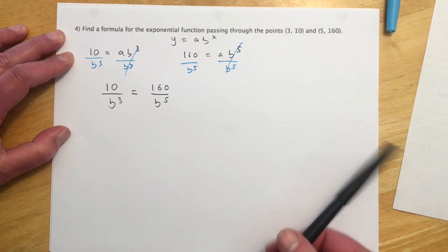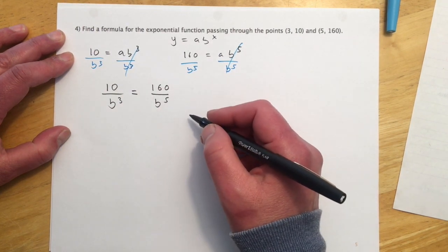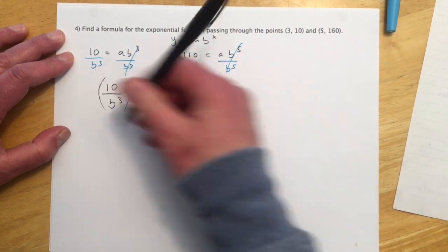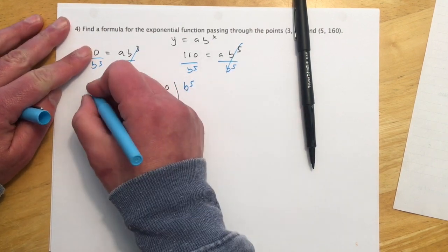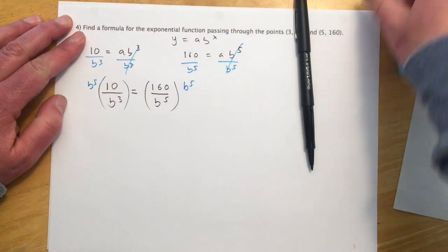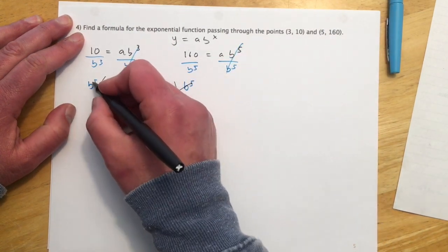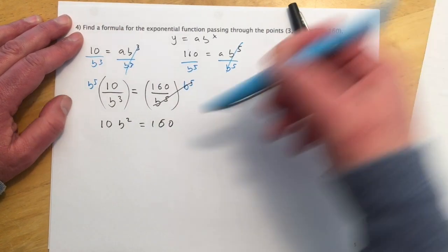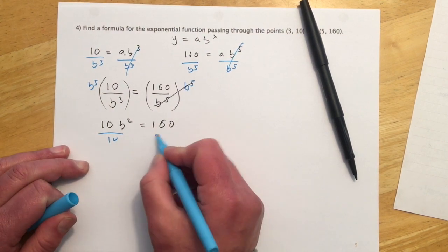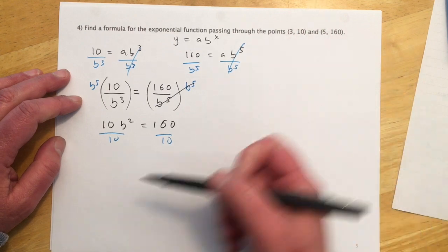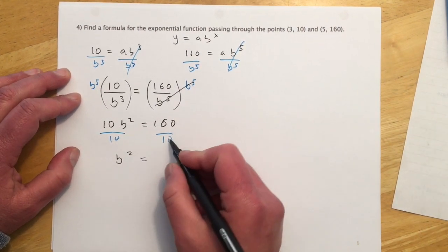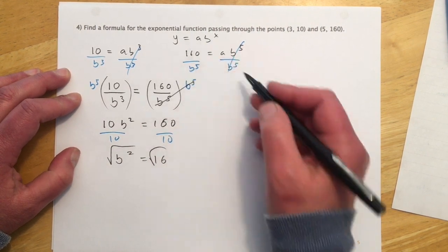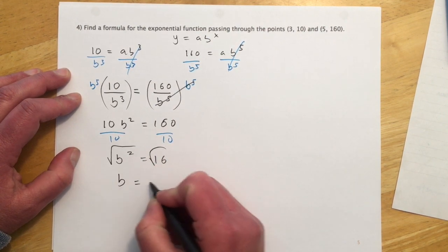And then I think I want to get my B's on one side and my numbers on the other. So I'm going to multiply both sides by b^5 to bring that over. So these cancel. Right here I'll have 5 up and 3 down, so that gives me 10b^2 equals 160. And then I'll divide the 10 over. And then that gives me b^2 equals 16. And then I don't have to worry about the plus or minus on the root because the base of an exponential can't be negative. So this will just be B equals 4.